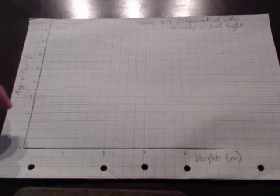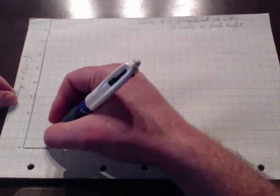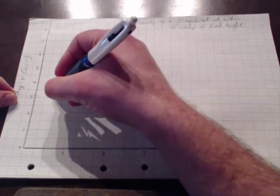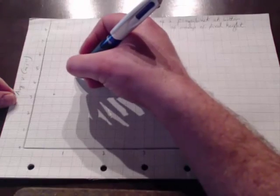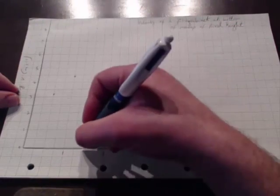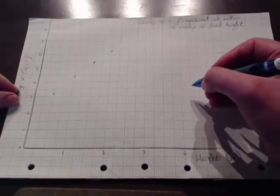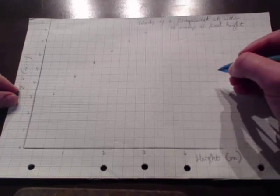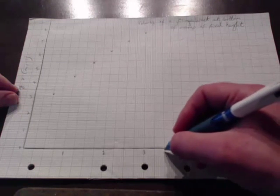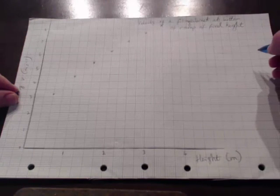So to plot my points, my first point is 0.5 meters and my average velocity is 3.14. I'll use a cross to show my point clearly. And at 3.5 meters, the average velocity is 8.3. I should have been maybe a bit more careful about where I put my title.